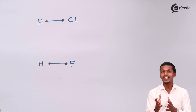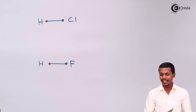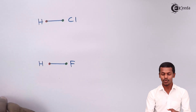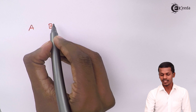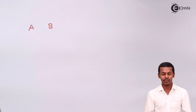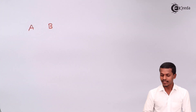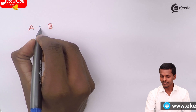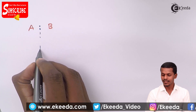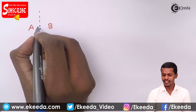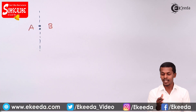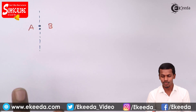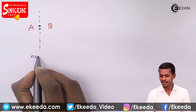We can see that the charge density is changing. Let me give a short example: suppose A and B are forming a bond and both have the same electronegativity. Obviously, the electrons are shared equally between A and B, and that is the reason this kind of molecule is known as non-polar.